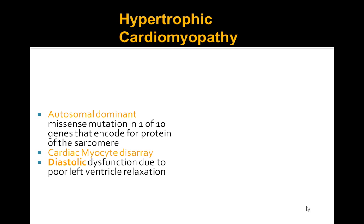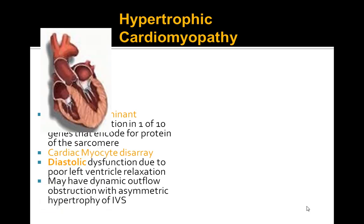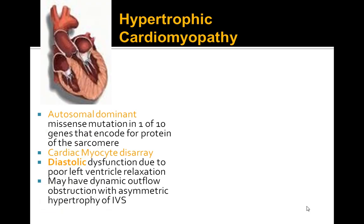With dilated cardiomyopathy the chambers are enlarged, leading to systolic dysfunction. With hypertrophic cardiomyopathy and diastolic dysfunction, the left ventricle cannot relax. There is also dynamic outflow obstruction with asymptomatic hypertrophy of the interventricular septum.